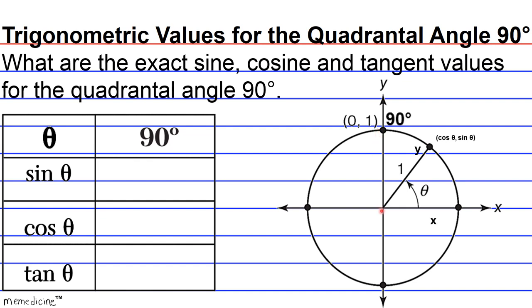Well, for the quadrantal angle, the radius of the unit circle, for the quadrantal angle 90 degrees, if theta were to go all the way back here, the coordinate, the point where it intersects with the unit circle, is going to be an x value of 0 and a y value of 1. Well, we know that the x value is going to be the cosine of theta, or the cosine of 90 degrees. Therefore, we can start to determine the exact values that were asked for in our question stem.